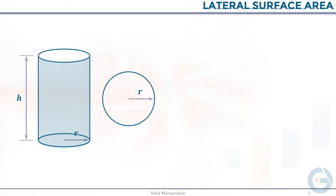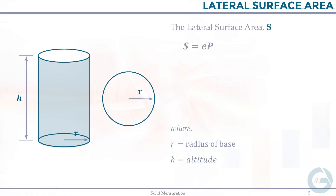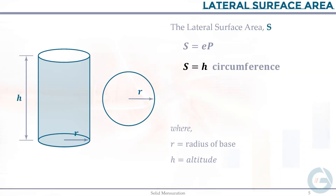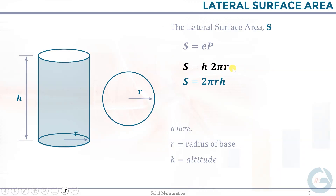Let's derive the formula for lateral surface area. For a cylinder, r is the radius of the base and h is the altitude. The general equation is the height times the perimeter of the base. Since the base is a circle, we use circumference: 2πr. Rearranging, the lateral surface area equals 2πrh. We'll use this formula for our calculations.